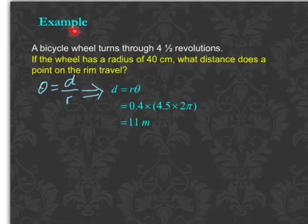The example here says a bicycle wheel turns through four and a half revolutions. If the wheel has a radius of 40 centimeters, what distance does a point on the rim travel?